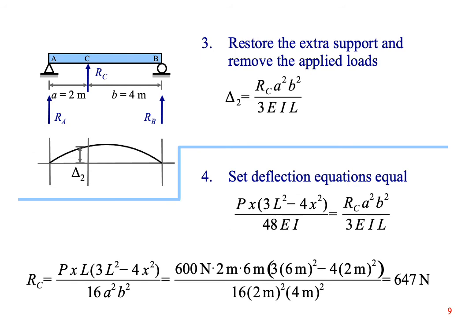Now we restore the extra support and remove the applied loads. Let the extra support force deform the beam and we can find the equation for deflection of a beam at a point load. Next, we set the two deflections equal to each other and solve. The reaction force at point C is 647 newtons.